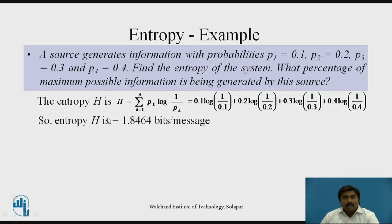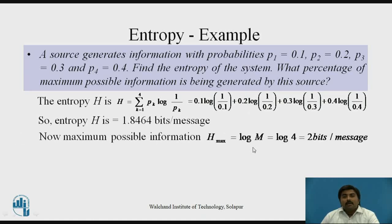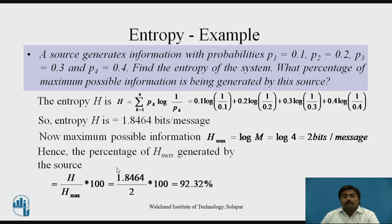Now you have the entropy of the system. The next question asks what percentage of maximum possible information is being generated by the source. We need to find H_max, which equals log(M), where M is the number of messages. With M=4, log(4) gives 2 bits per message. The percentage is H divided by H_max times 100, which equals 92.32%.